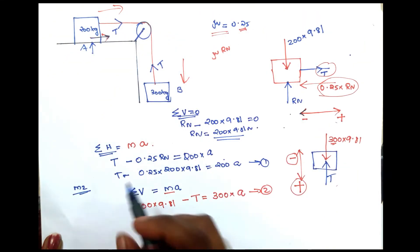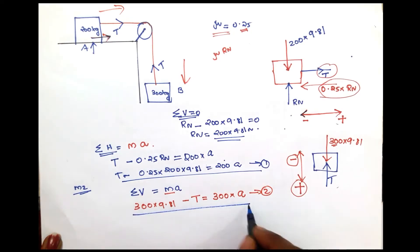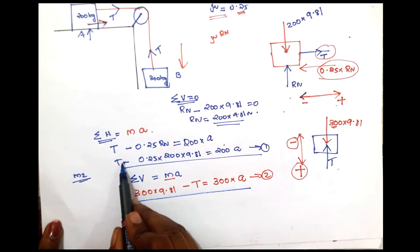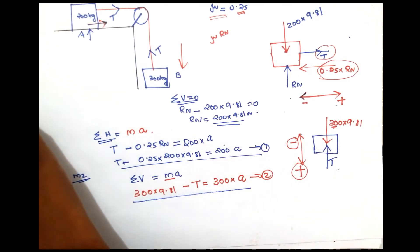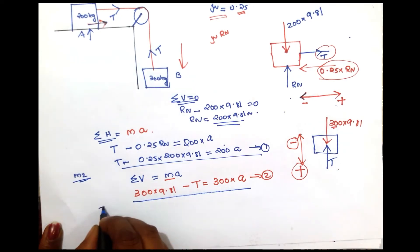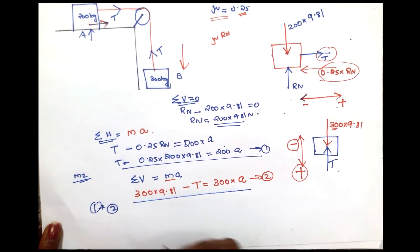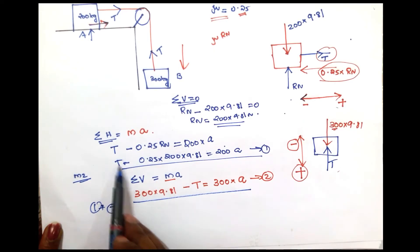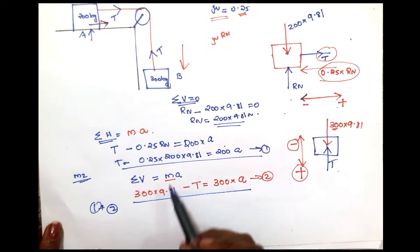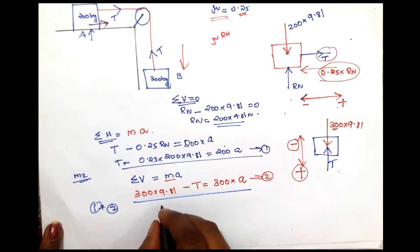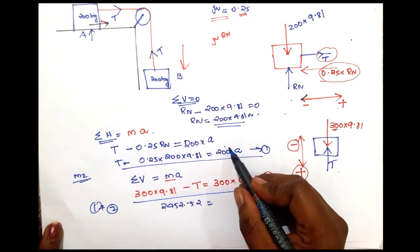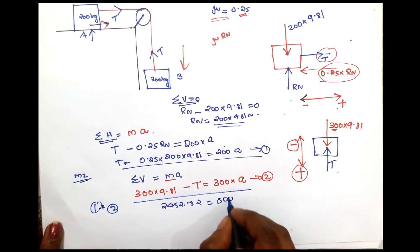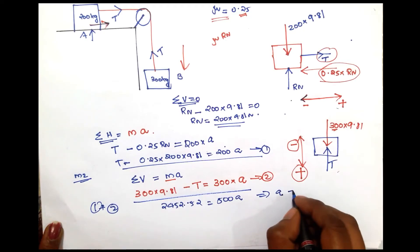We now solve Equation 1 and Equation 2 together. Adding the two equations, T minus T cancels out to zero. Solving the resulting equation gives us the acceleration A.